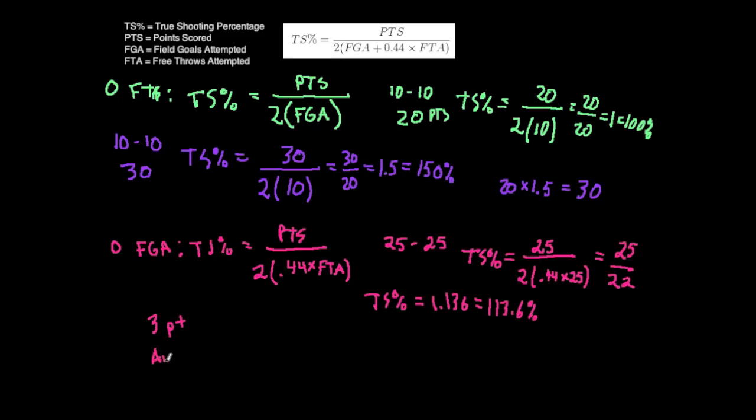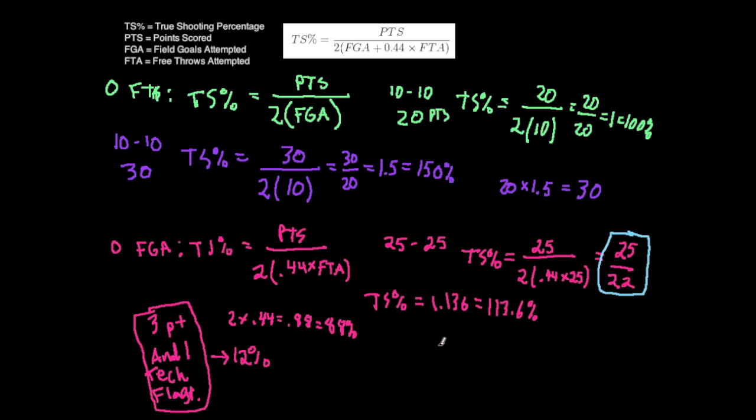Someone could have gotten an and-1, or shot a technical foul shot, or flagrant foul shots. These are extra free throws beyond normal 2-point fouls. If we look at 2 times 0.44, that equals 0.88 or 88%. This 88% is the percent of free throws that come on a normal 2-point foul shot. The other 12% are these extra free throws. On average, for every 25 free throws taken, 22 are on a normal 2-point foul shot, and the other 3 are from these gravy free throws.